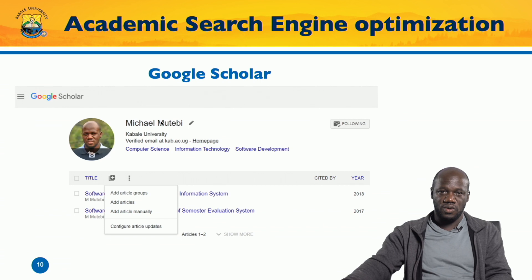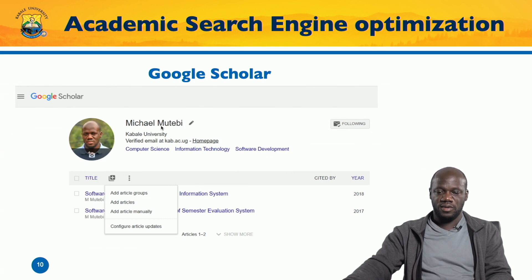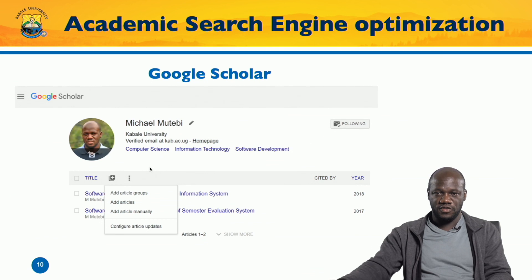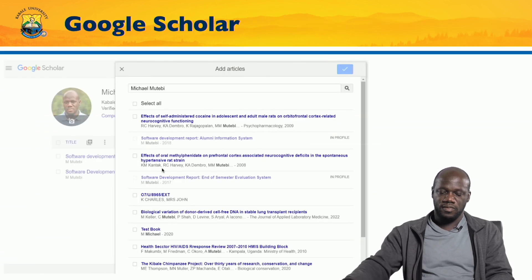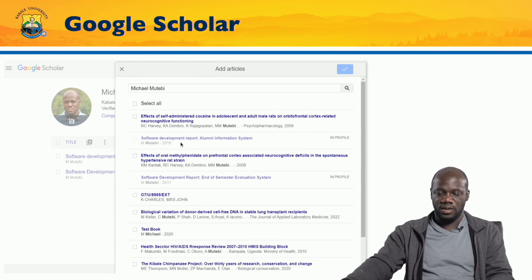With Google Scholar, if you have a Google account, you can have a Google Scholar profile. If you have your research in any repository considered an authentic research source, like DSpace, the Google search engine indexes your research and makes it available on Google Scholar. As you can see, just by typing my name, I get suggestions of research that could be mine — and if I have my work on DSpace, I'll be able to find it and add it to my Google Scholar profile.